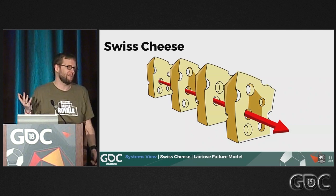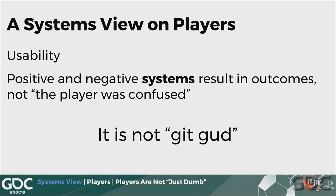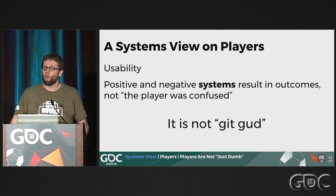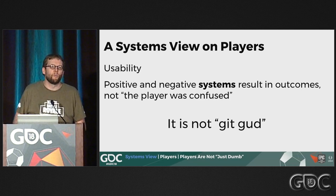A systems view on players is the heart of usability and UX. When we write UX reports, we don't write 'the player was confused' — that puts the blame on the player. We write what the issue was, for example 'the color blue was not readable on the background,' then write what the outcome was: 'the player couldn't read it.' That's how we present a UX issue — not 'get good' or 'players are just dumb,' but looking at the system to see what is causing it.